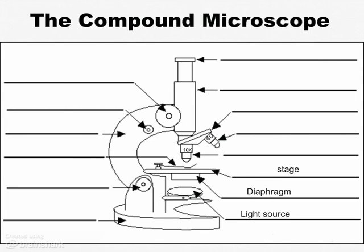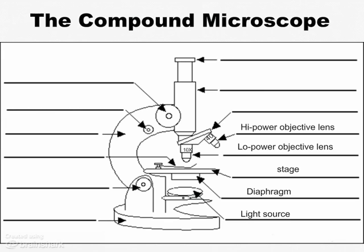We're going to stick the specimen on the stage. The stage has a hole in the middle that lets the light shine through and through the specimen — which has to be transparent and very thin. The first lens the image goes through is the low-power objective. The only reason it's the low-power objective is because 10x is lower than 40x, and those are the two choices we have here. The 10x objective is not always the low-power objective. We could also be using the high-power objective, which is the 40x lens in this case.